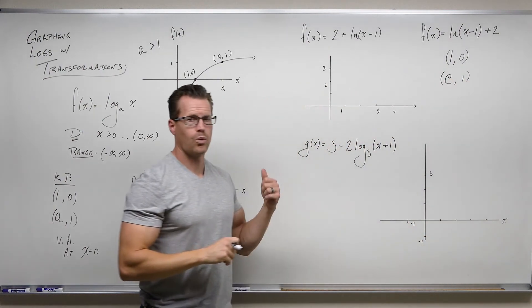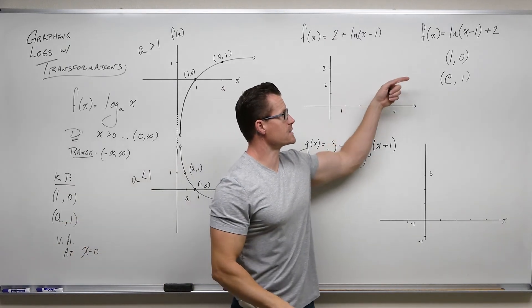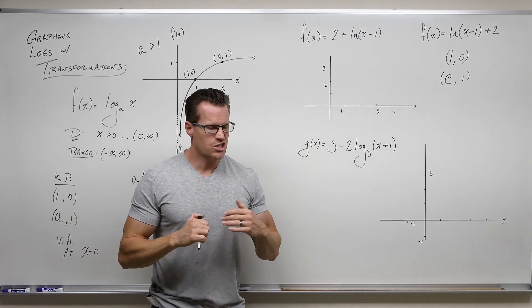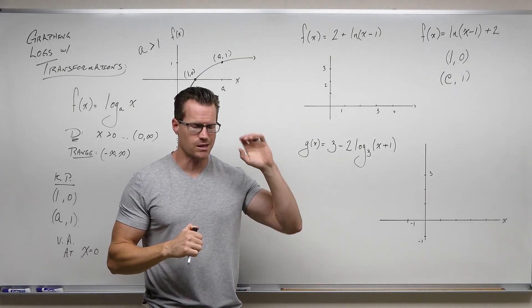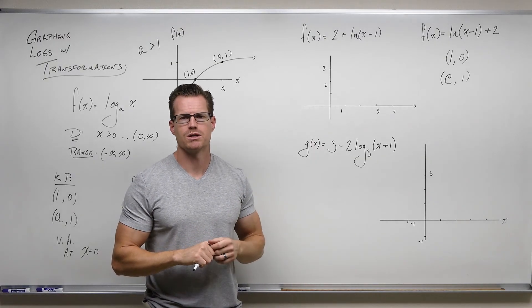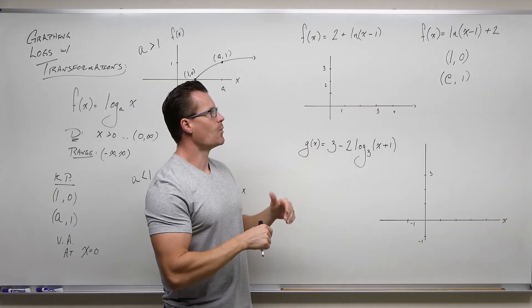If it's a logarithm, I have some key points. Let's write our key points. Our key points are always 1, 0, and the base, 1. Now that might get a little confusing if you don't have a base. You need to know that base is E. Our key points are 1, 0, right there, and whatever the base is, 1. Our base is E, 1.